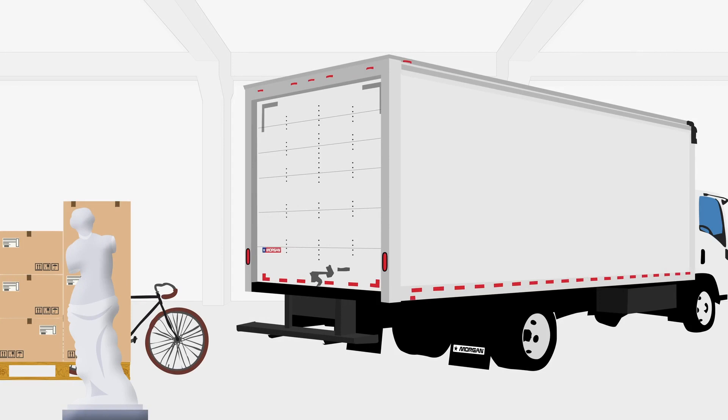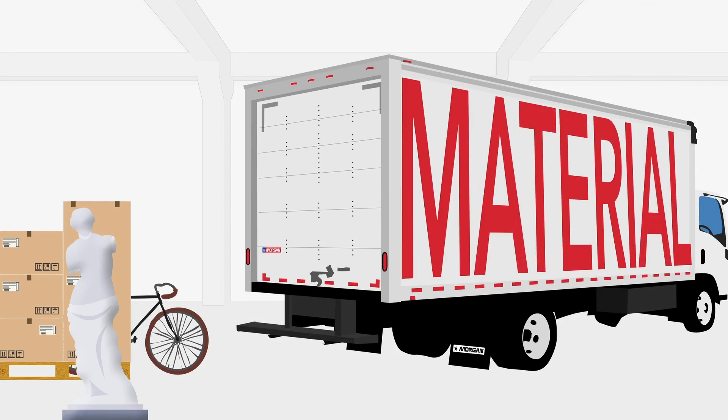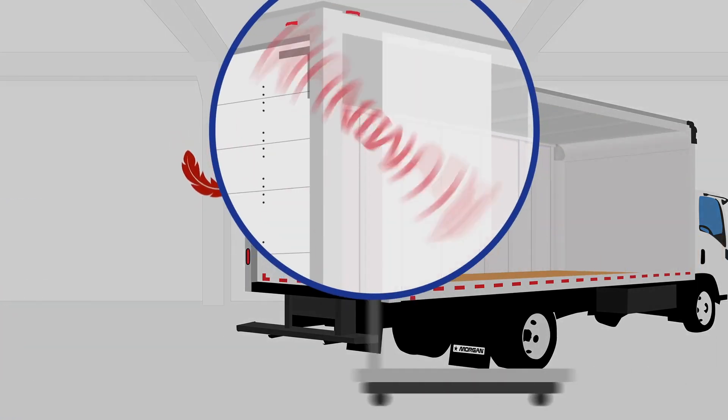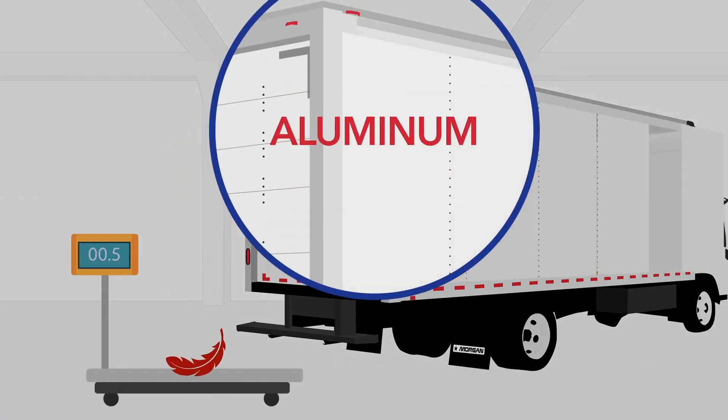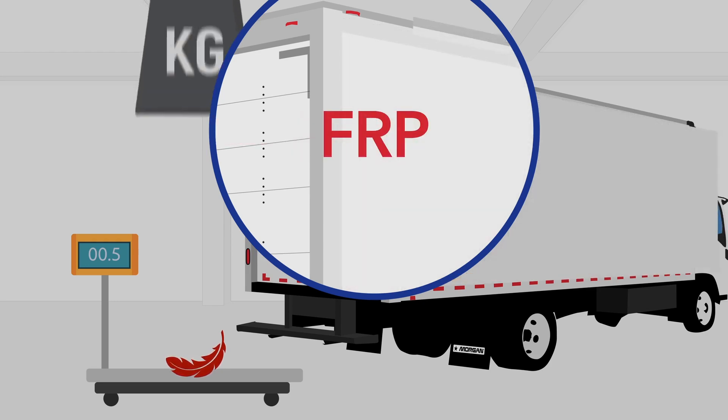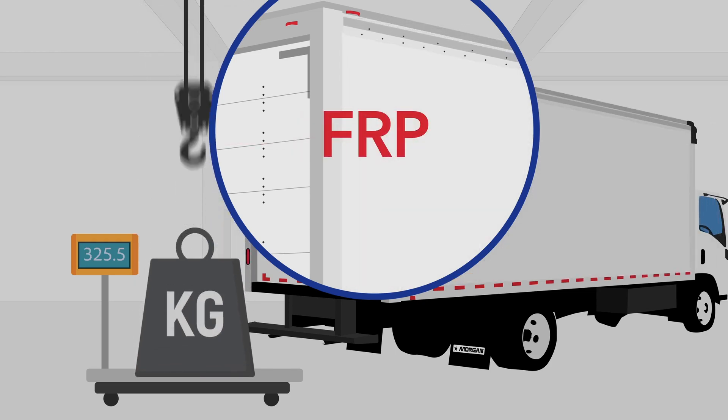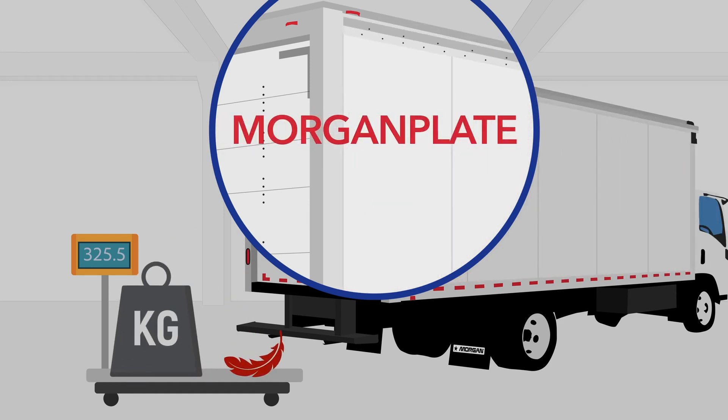What you're hauling can also call for a specific body material construction. What your body is made of, and what features are needed to do what you need to do safely and efficiently are important. For example, Morgan dry freight bodies offer aluminum sheet and post for lightweight and better fuel efficiency, fiberglass reinforced plywood or FRP for added strength, or Morgan plate, which offers a bit of both.